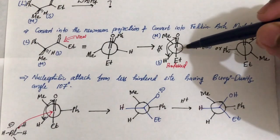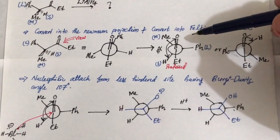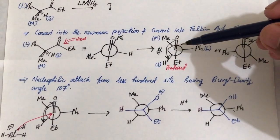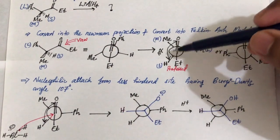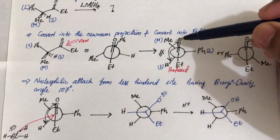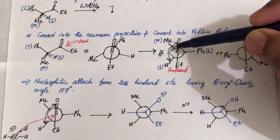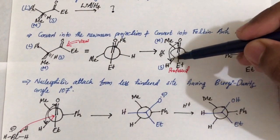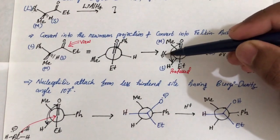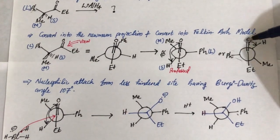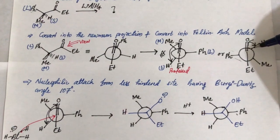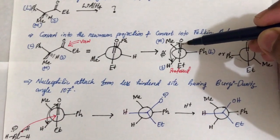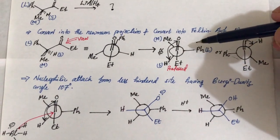From these two Felkin-Anh conformations, we select the one where the bond angle between the smallest substituent and the anti-carbonyl direction is greater than or equal to 107°. At the alpha carbon, hydrogen is the smallest group. In the preferred conformation this angle is ≥107° — this is called the Bürgi-Dunitz angle. In the other conformation the angle is less than 107°, so it is disfavored.